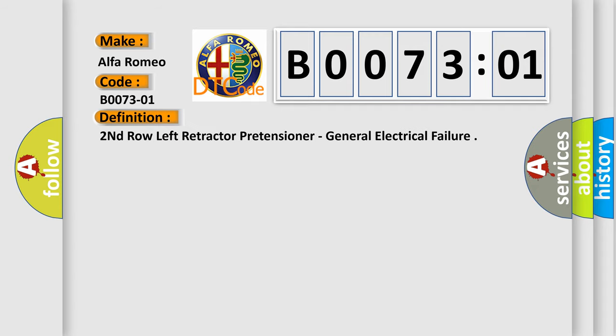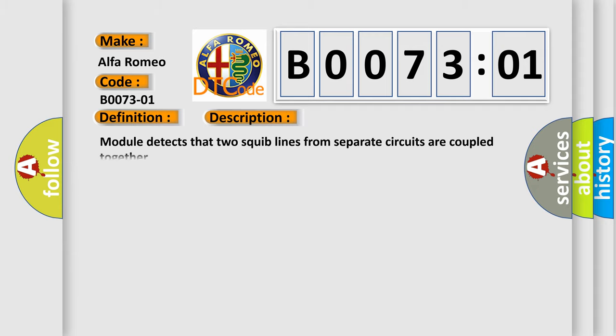The basic definition is second row left retractor pretensioner, general electrical failure. And now this is a short description of this DTC code.